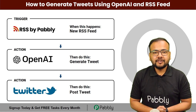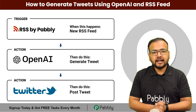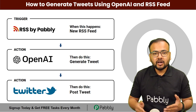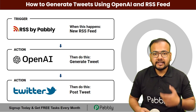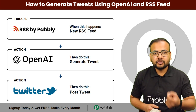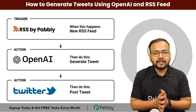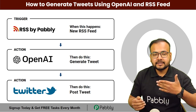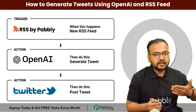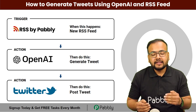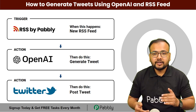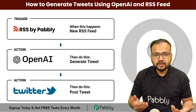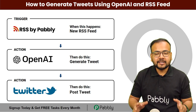In this video you will learn to generate a tweet for your new RSS feeds automatically and share that RSS feed along with a tweet on Twitter automatically. We are going to set up this automation by connecting RSS feeds feature of Pably in the trigger, then OpenAI in the action step, and then Twitter in another action step — all without any coding.